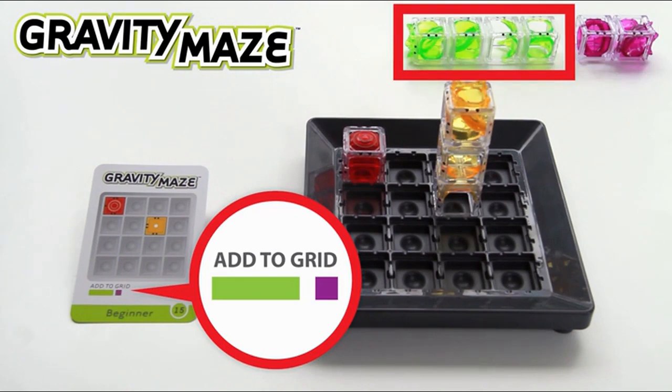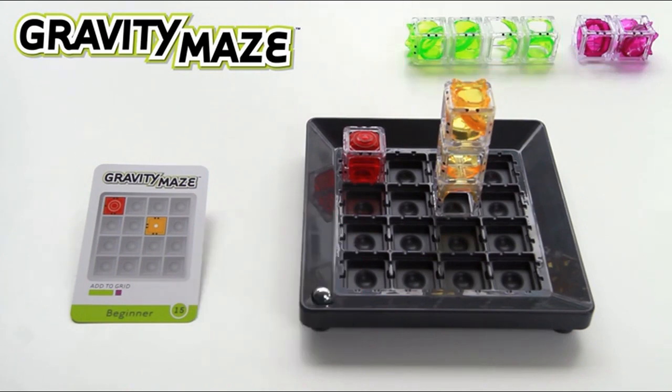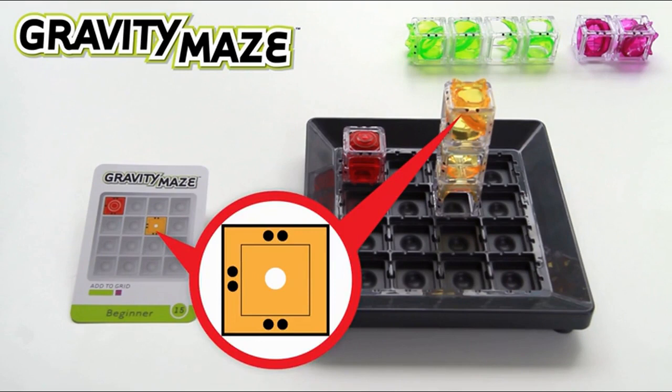Set aside the remaining towers. You won't need all of them for every challenge. Black dots on the towers show you the correct orientation for the towers.